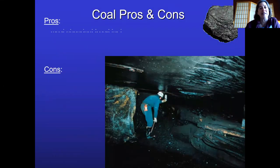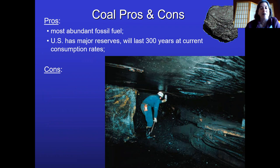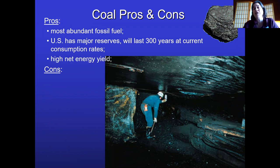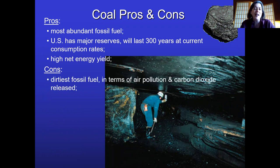On the pros and cons of coal: we have tons of it — the United States has more coal than we know what to do with, and we actually export coal. We have at least 300 years' worth. Coal also burns really well; it has a high net energy yield, especially with mountaintop removal, which lowers costs by taking a lot of people out of the picture. We get a lot of energy from burning coal.